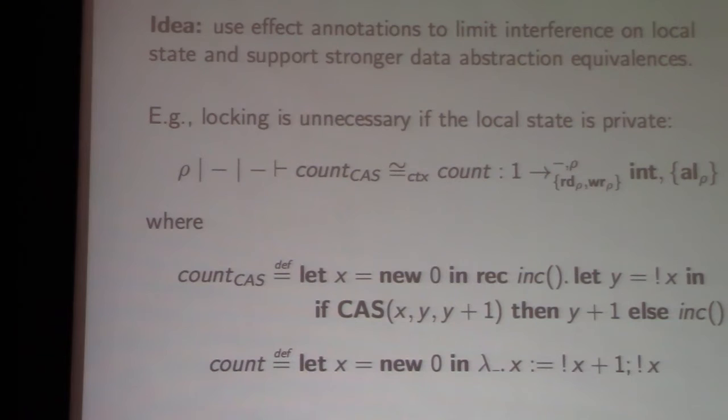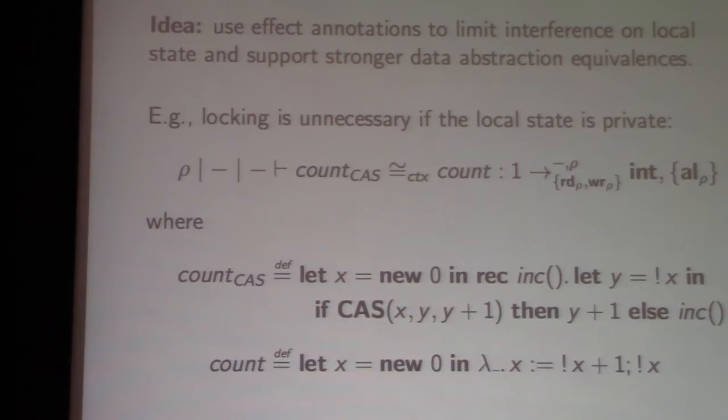Another application is data abstraction results that actually depend on limiting interference. We can show that the counter module I gave before is contextually equivalent to a counter module that does locking at this type, because the type and effect system's restriction of interference means the locking doesn't matter. We have the original implementation and an implementation using a compare-and-swap loop to atomically increment the count — these two are contextually equivalent at that effect type, but not equivalent at a weaker type or the underlying ML type.